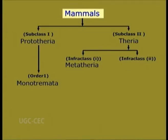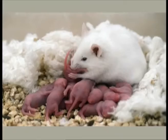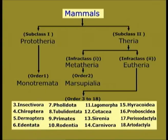Infraclass 2: Eutheria. Eu meaning true, Therios meaning beasts — the first true beasts. These are the higher viviparous placental mammals without marsupium. Young ones are born in a relatively adult state. Dentition never exceeds 3143 by 3143, that is 44 teeth in all. Eutherians constitute the vast majority of living mammals arranged in 16 orders, mostly representing the typical characters of class Eutheria.